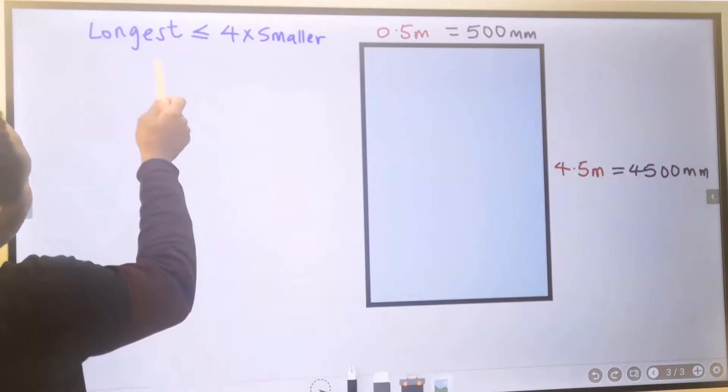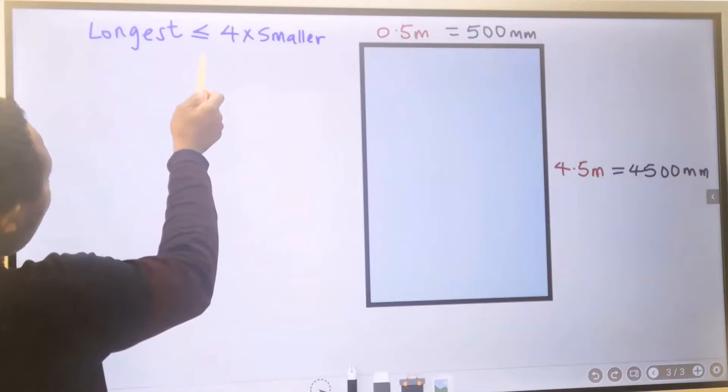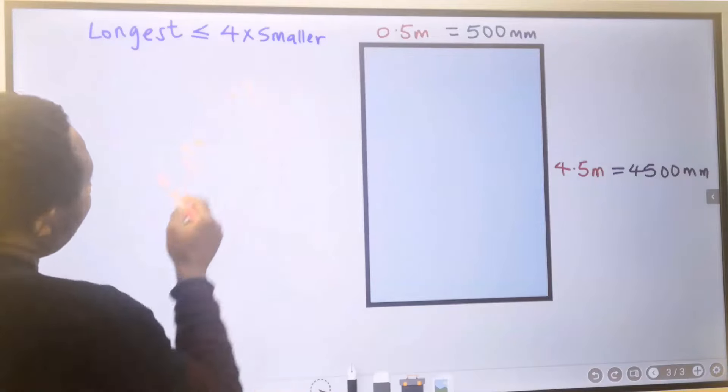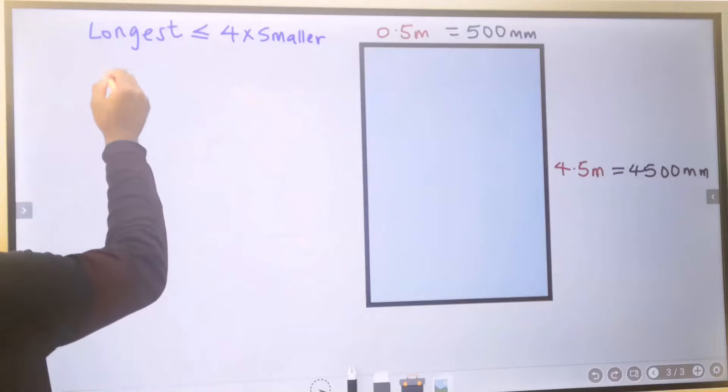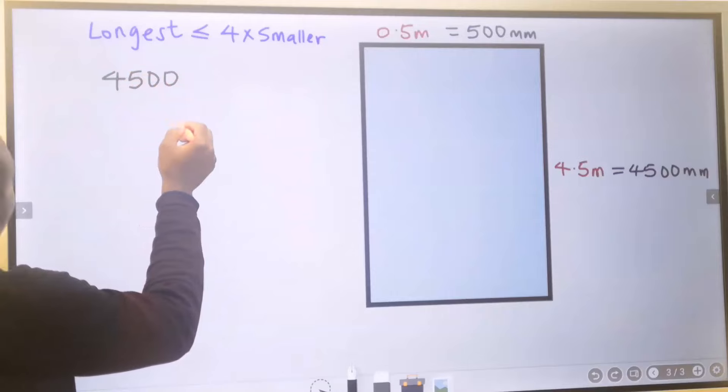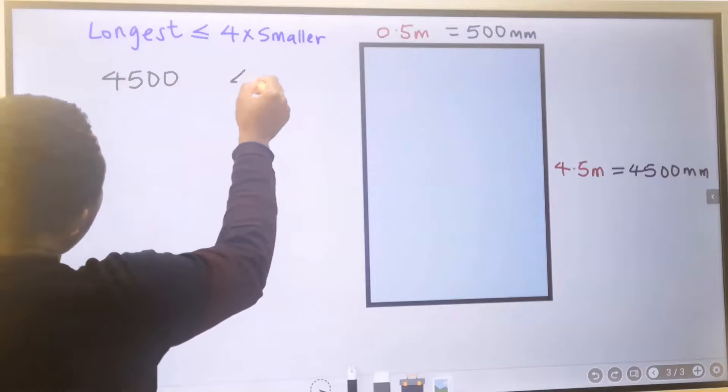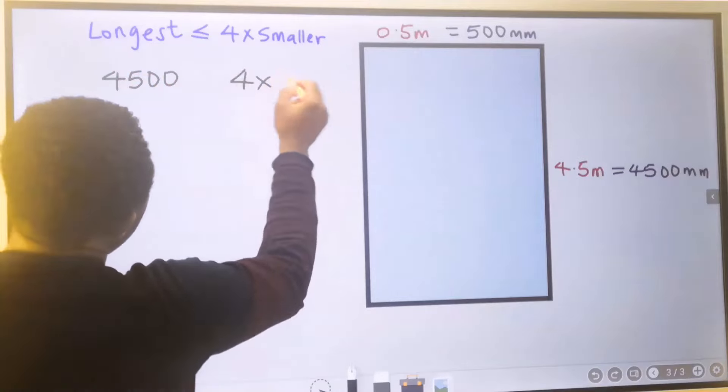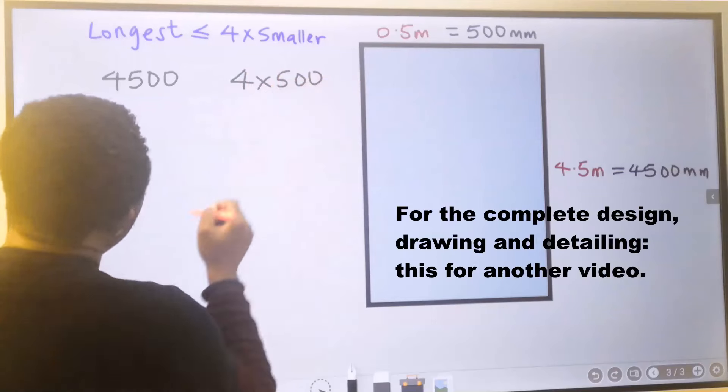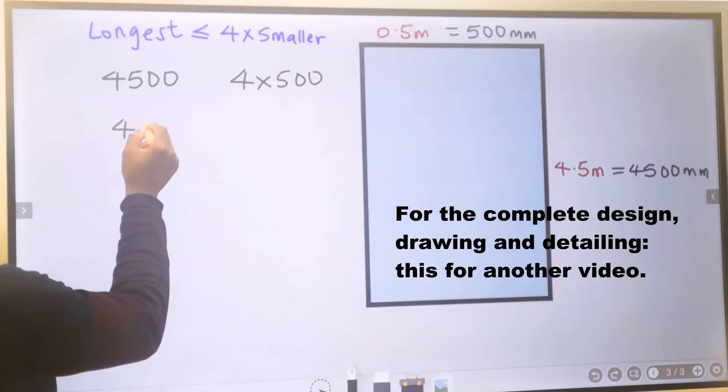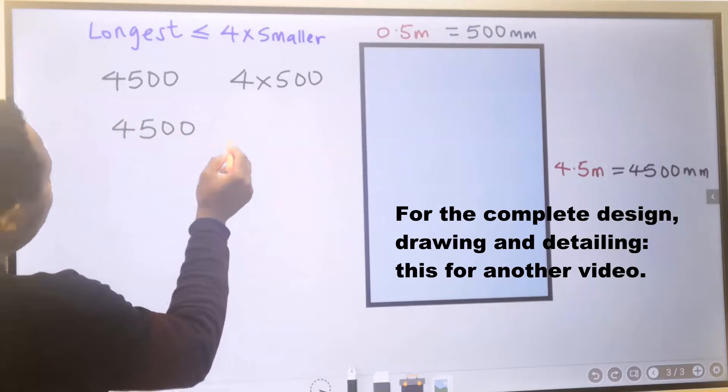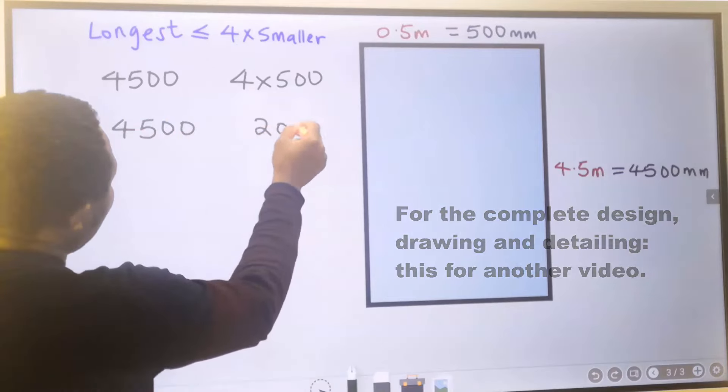In the condition, the longest side must be less than or equal to 4 multiplied by the smaller side. The longest side is 4500 millimeters, and the smaller side is 4 times 500. This is 4500, and this will give us 2000.